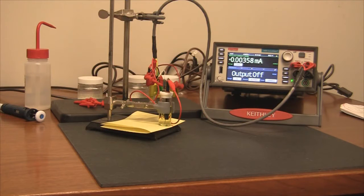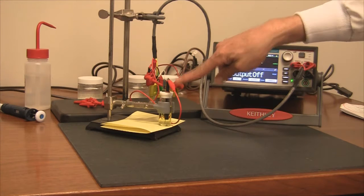As you can see, I have the model 2450-EC here. I have the force connection on the model 2450-EC connected to the counter electrode here. I have the sense terminal for the high side also connected to the counter electrode.